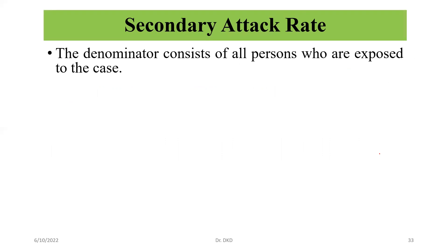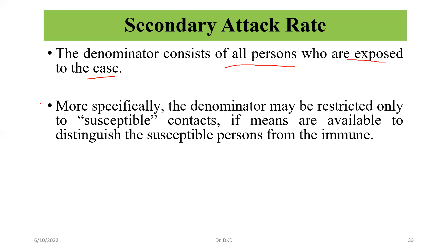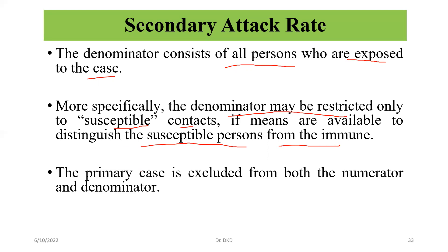Some important points for secondary attack rate: the denominator consists of all persons who are exposed to the case. More specifically, the denominator may be restricted only to susceptible contacts if means are available to distinguish the susceptible person from the immune. The primary case is excluded from both the numerator and denominator.